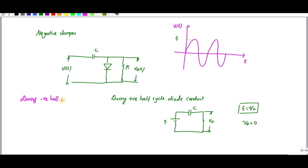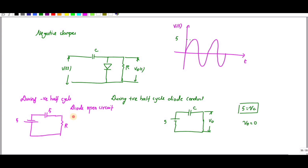During the negative cycle, the input is minus 5 volts. The capacitor is charged to 5 volts and the diode is reverse-biased, so it becomes open circuit. We calculate V_out across the resistor only. Writing KVL: minus 5 equals 5 plus V_out, so V_out equals minus 10 volts.